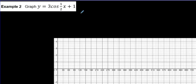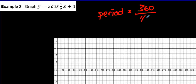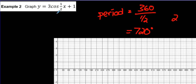Let's look at another question — a little more complicated. Quickly, the period: 360 divided by k, which in this case is one-half. Dividing by one-half is the same thing as multiplying by 2, so 720 is going to be the period. You can see 720 is way over there — it's a very long period, twice as long as before. So we take the one-half and flip it when talking about mapping notation.